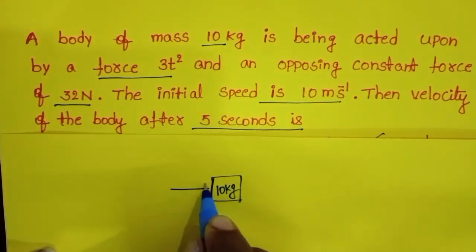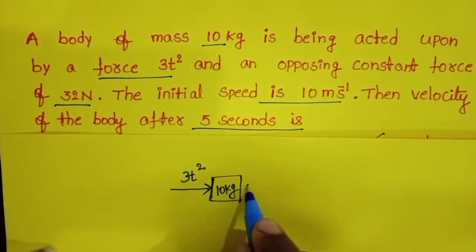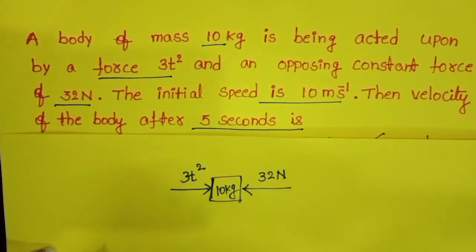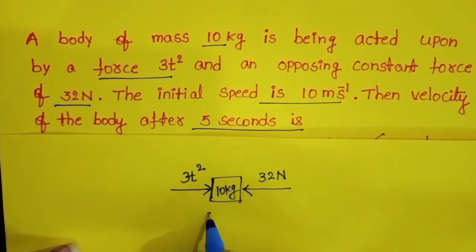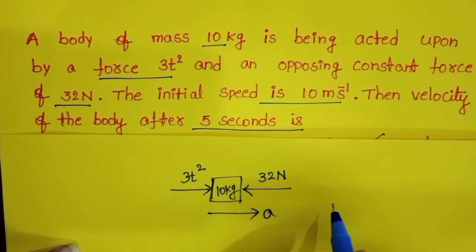The 3t² force acts on the body and an opposing constant force of 32 N acts on the same body. These two forces act in opposite directions. Because of the difference of these two forces, the body accelerates in the forward direction.